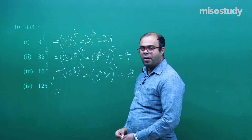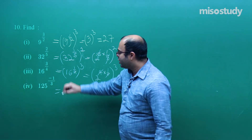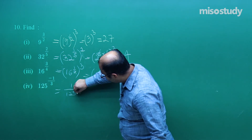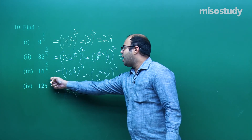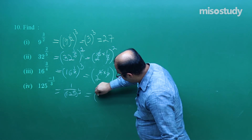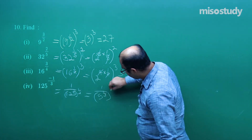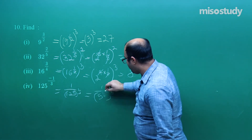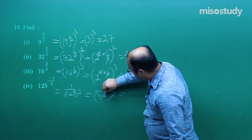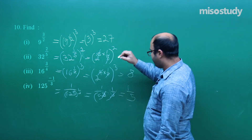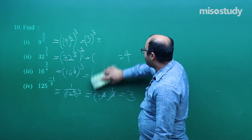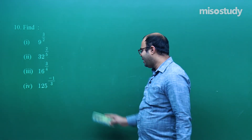For 125^(−1/3): the negative exponent means we take the reciprocal, giving 1/(125^(1/3)). Since 125 = 5³, we have 1/(5³)^(1/3) = 1/5^(3 × 1/3) = 1/5. So the final answer is 1/5. This is how we solve questions involving exponents to get the simplified answer.